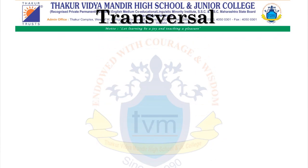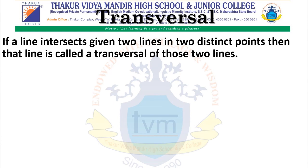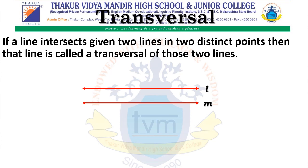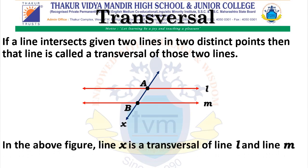What is a transversal? If a line intersects two given lines at two distinct points, then that line is called a transversal of those two lines. For example, here we have line L and line M, and both lines are intersected by a third line X. Line X intersects line L and line M at points A and B respectively, at two different points. Therefore, line X is a transversal of line L and line M.